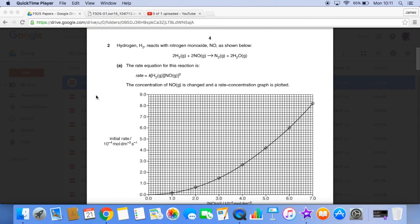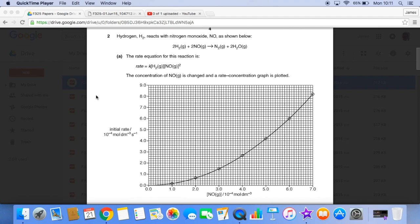So hydrogen reacts with nitrogen oxide as shown in the equation. We're given the rate equation and we're also given a rate concentration graph for the NO.